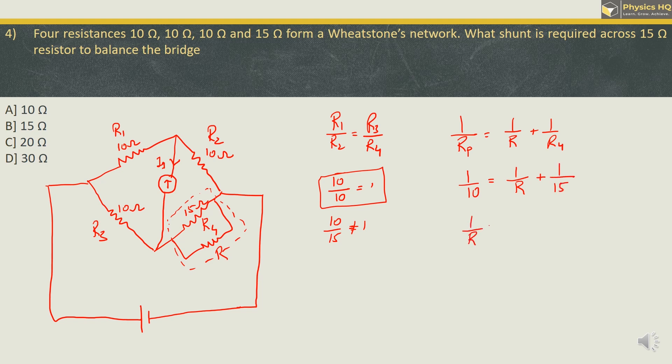From this what we can say is 1 by R is equal to 1 by 10 minus 1 by 15. If we take the LCM over here, LCM will be 30. This will be 3 minus 2 which is 1 by 30. So from this we can say that we need to connect a shunt resistance of 30 Ohm over here, so that the bridge is balanced. So the correct option is option D.